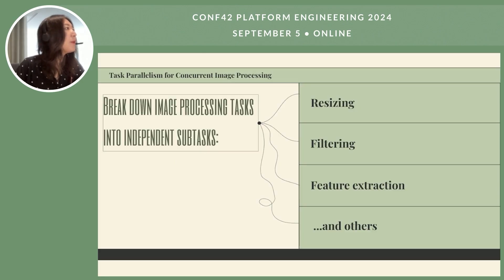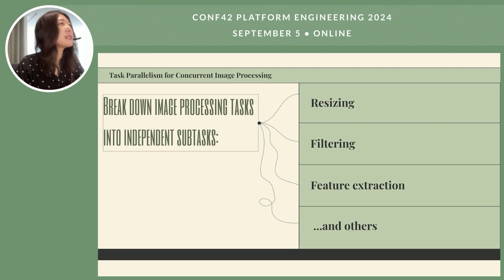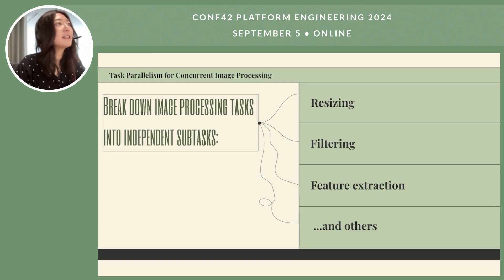For example, with parallel tasks for image processing, we can break a task into independent sub-tasks such as resizing, filtering, and feature extraction, and perform these independent steps concurrently. If necessary, we can then synchronize the results of those sub-tasks to obtain the final output.